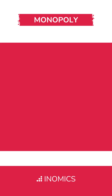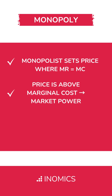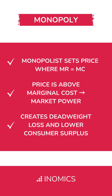Some key takeaways: monopolies set price where MR equals MC; price is above marginal cost; and this creates deadweight loss and lower consumer surplus.